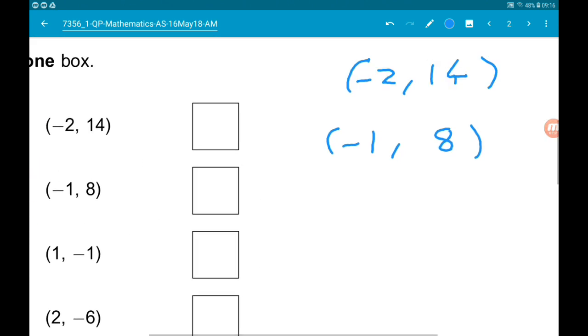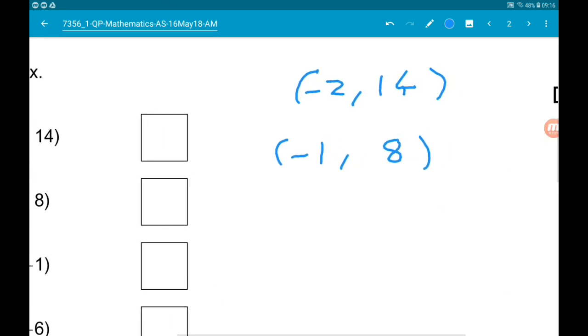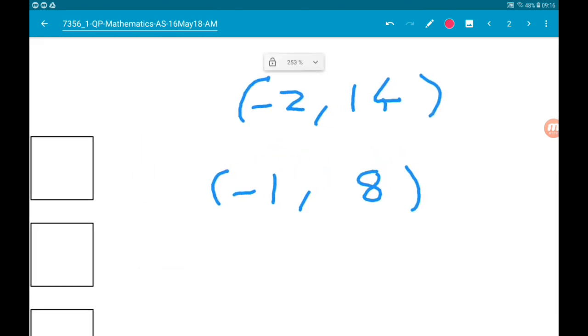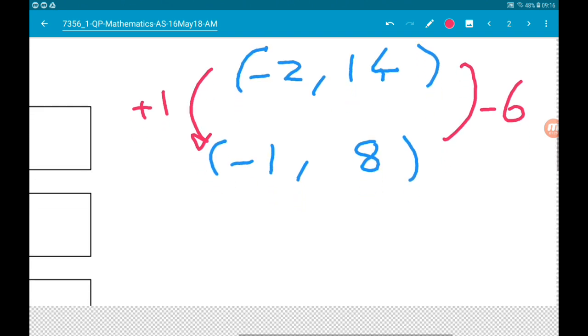Let's just work out how we get from coordinate point to coordinate point. To get from minus 2 to minus 1, we are adding 1, and then if we add 1 to our x coordinate, we are subtracting 6 for our y coordinate.